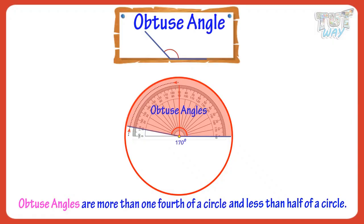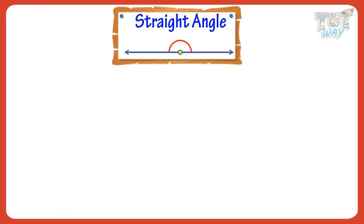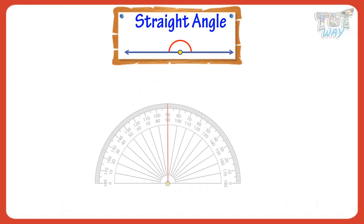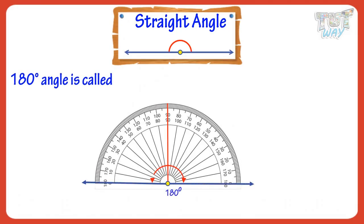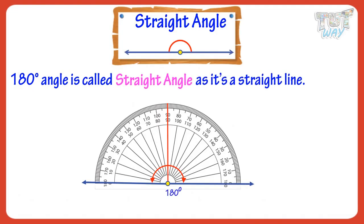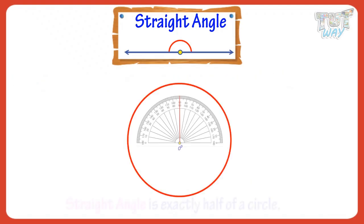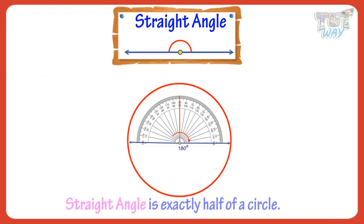Now let's learn about straight angles. A 180 degree angle is called a straight angle, as it forms a straight line. So a straight angle is exactly half of a circle.